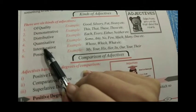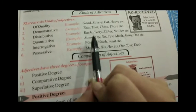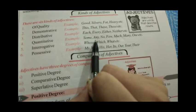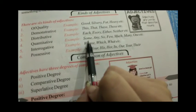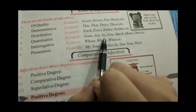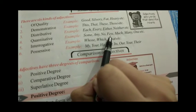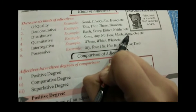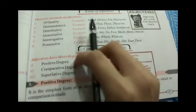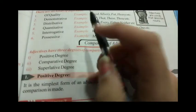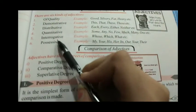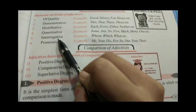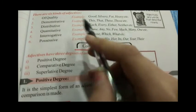The fourth is quantitative adjective, जिसमें आता है some, any, no, few, much, many, one, etc. जिसमें हम कुछ quantity बताते हैं — इसमें हम number बता रहे हैं।